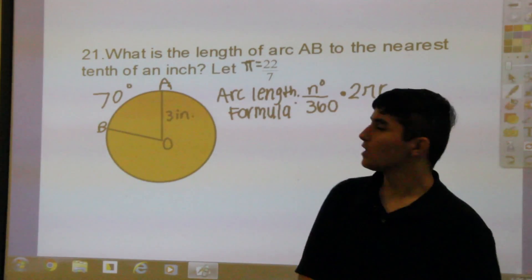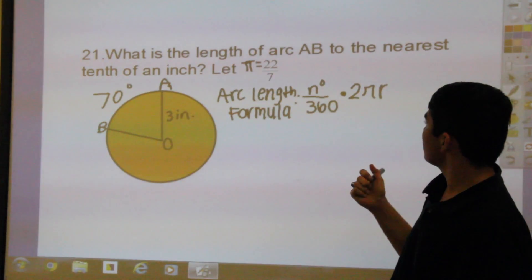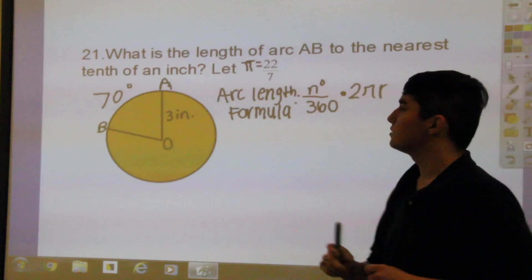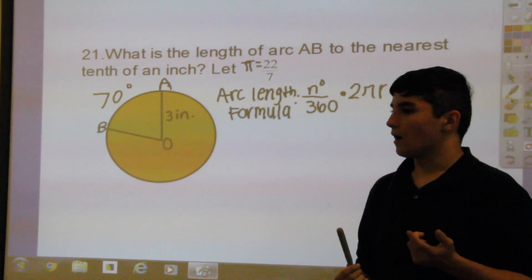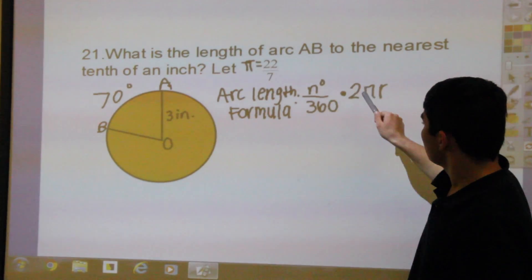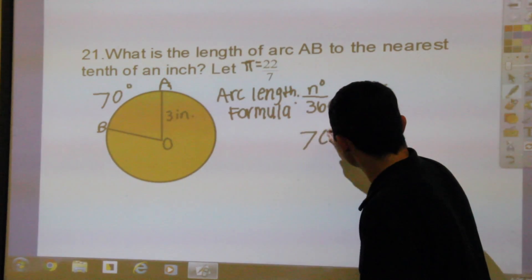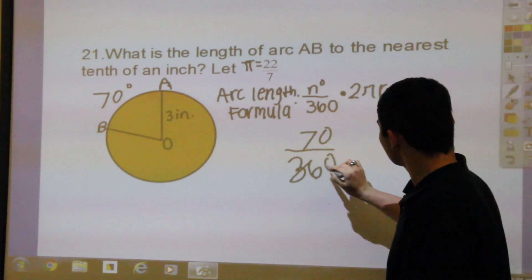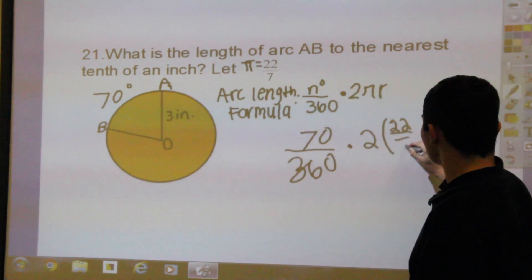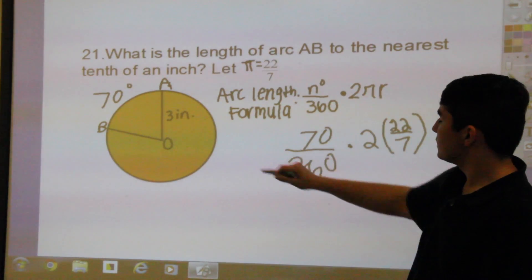I'm Jake from Positors, and now we can do number 21. This question asks: what is the length of arc AB to the nearest tenth of an inch? It specifically says to use pi equals 22 over 7. We all should know that the arc length formula is degrees over 360 times 2 pi r. So that means 70 over 360 times 2 times 22 over 7, with r equal to 3.